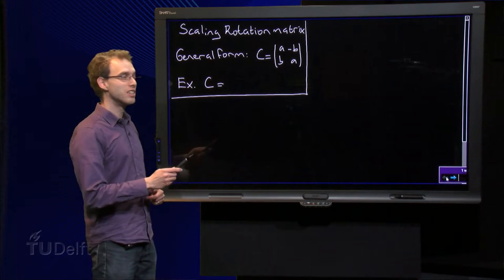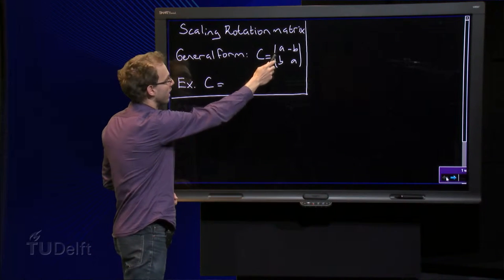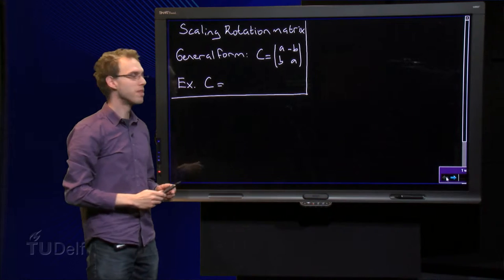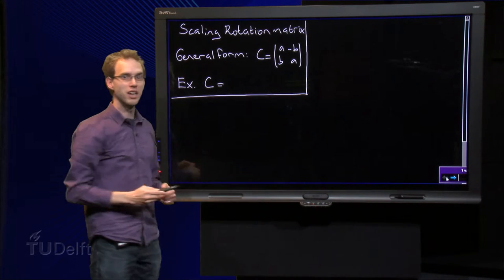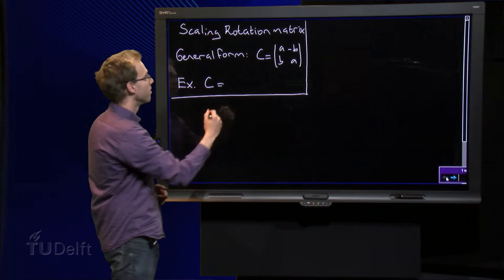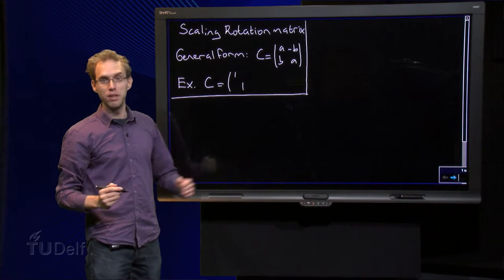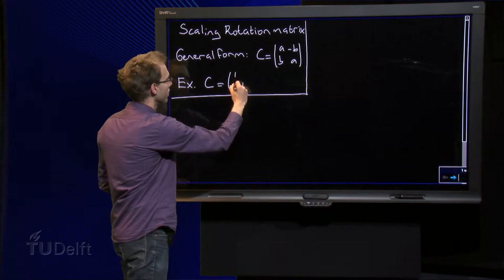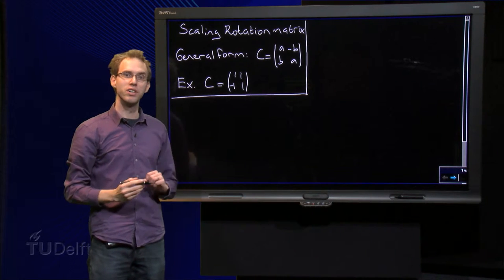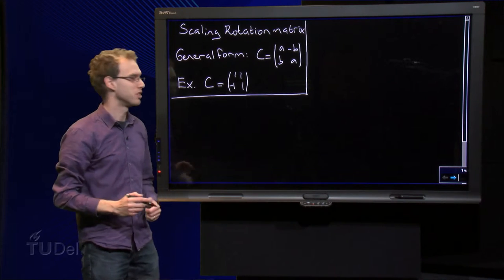A scaling rotation matrix C is of the following general form: C equals [[A, B], [-B, A]], which means that the elements on the diagonal are the same and the elements off the diagonal are the same apart from a sign. So we can, for example, take a matrix where we put A equals 1 over here, and we need a 1 here as well. And let's take B, for example, minus 1. That means that the minus B over here becomes a 1. So that is an example of a scaling rotation matrix. But where is the scaling and where is the rotation? We will see that soon.